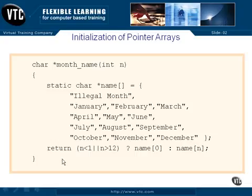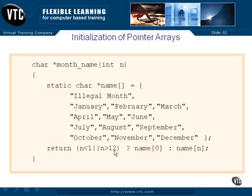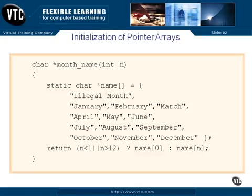Now, our return is going to use our little conditional operator that we looked at a long time ago. We're going to do a quick check here and find out if n is less than 1 or n is greater than 12. That's an invalid month, and if that happens to be true, we will return this first value, which is name sub 0. And name sub 0 is the pointer — remember this is a 13-element array, because we have 13 elements from 'illegal month' through December. It will return the pointer stored in name sub 0. Month name is supposed to return a character pointer, so that's exactly what we have to send back.